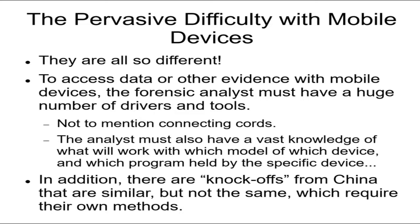You also have to know about connecting cords — if the cell phone doesn't have a good connecting cord, you won't be able to get the information out of it into your analysis computer. You need to know the make and model, which program works with which one, and how to get the information. There are also knockoffs — imitation brands, mostly from China — and they are not exactly the same; sometimes there are enough differences to matter.